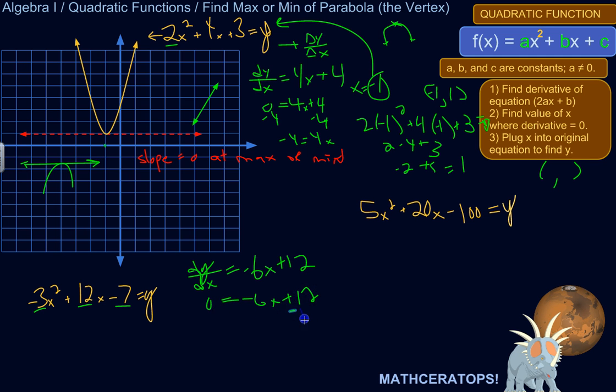So 0 equals negative 6x plus 12. Now I'm just solving for x. Negative 12. Negative 12. Negative 12 equals negative 6x. Now I just divide it by negative 6 to solve for x. So negative 12 divided by negative 6 is 2. It's positive 2. x equals 2.